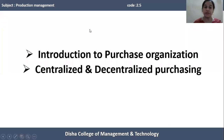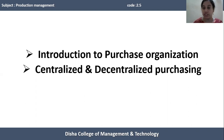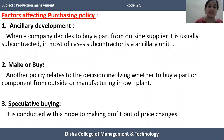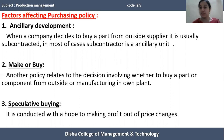Good morning students. Today we are going to discuss another topic of the second unit: Purchase Organization, and what is a centralized and decentralized purchasing system. In our last class we discussed various steps involved in the purchasing policy or purchasing process and what factors affect it. We discussed three factors: ancillary development, make or buy, and speculative buying. Apart from those, there are also several other factors which affect purchasing policy.